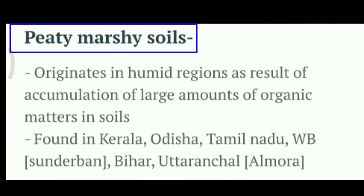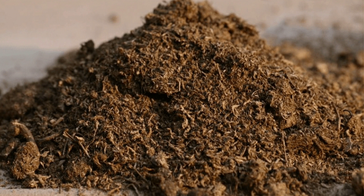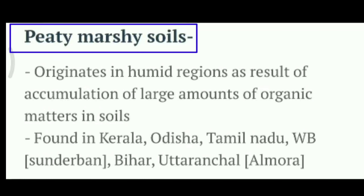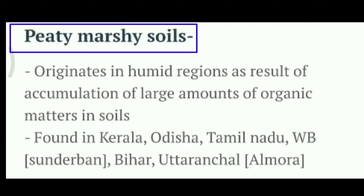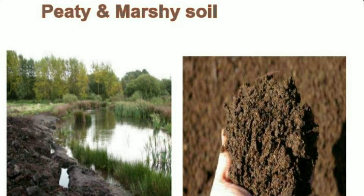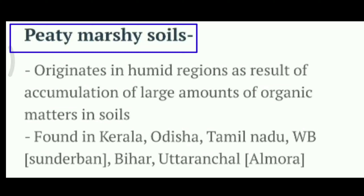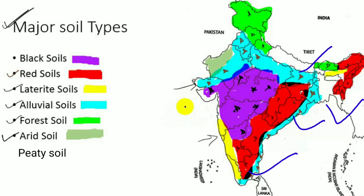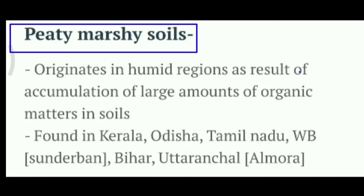Next is peaty and marshy soil. This soil has some local names similar to saline and alkaline soils. It is normally black in color and retains moisture very well. It is used more in horticulture and gardening. This soil is rich in humus and organic content, but it is acidic in nature, so it is somewhat less fertile. This soil is found in Bihar, West Bengal, Odisha, Tamil Nadu, and subtropical areas.